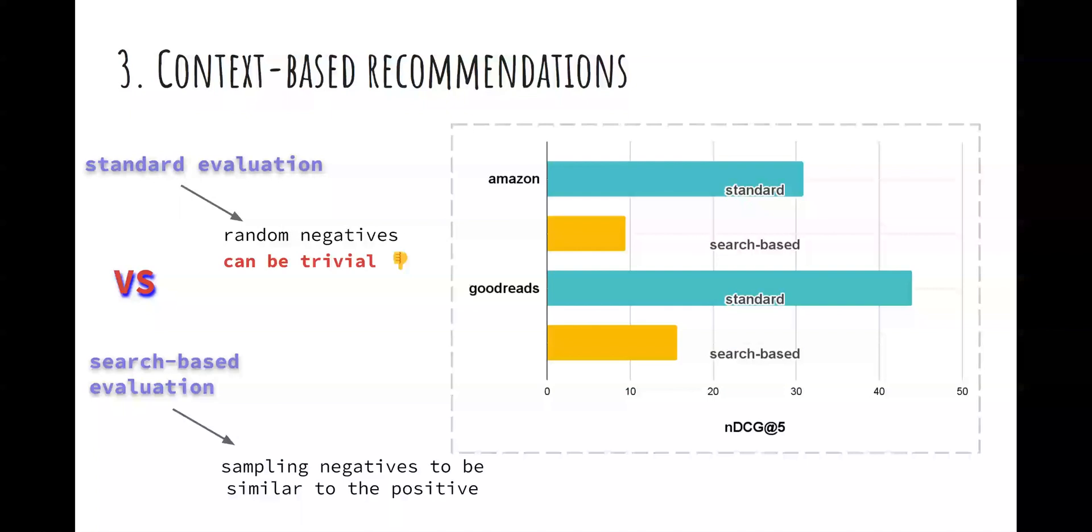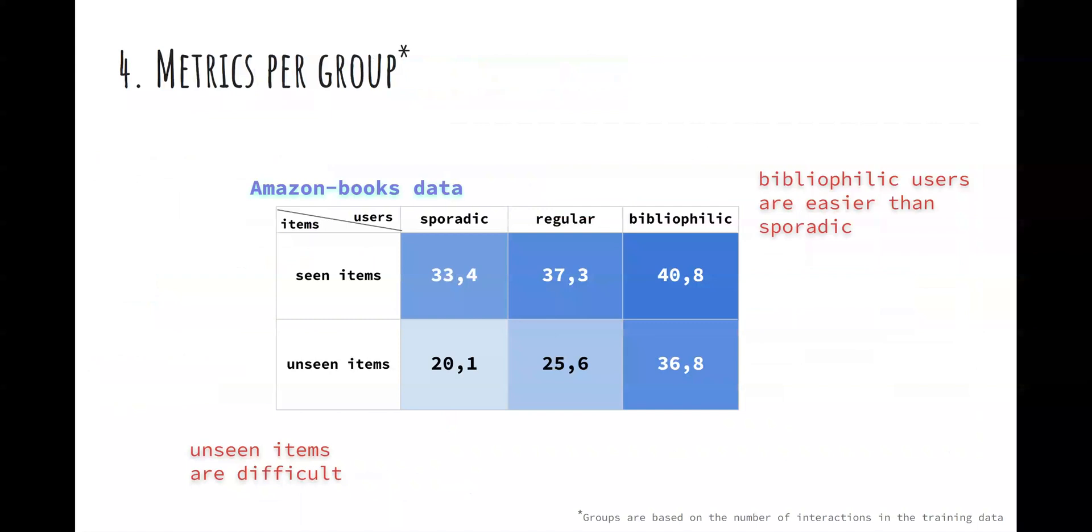In lab settings it is often unfeasible to conduct evaluation on the full collection of items. Instead, studies evaluate the ranking of a known positive item against a pool of randomly sampled negatives, which can frequently be trivially distinguished from the positive item. We propose a contextualized evaluation mode where the negative items are sampled to be textually similar to the positive item. This makes the recommendation more challenging, which we observe through the dramatic decrease in the model's performance.